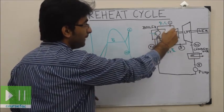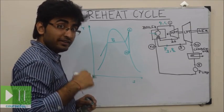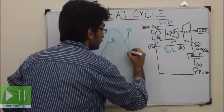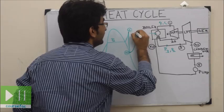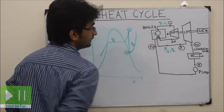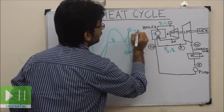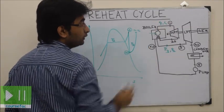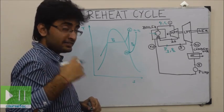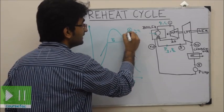After expansion in the high pressure turbine, the steam is sent back to the boiler for constant pressure heat addition at pressure P3. This is again a constant pressure heat addition at P3. The temperature T equals T1 — the temperature for both the high pressure turbine and the low pressure turbine is the same — meaning the steam is reheated to the same temperature T1.